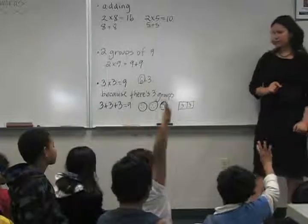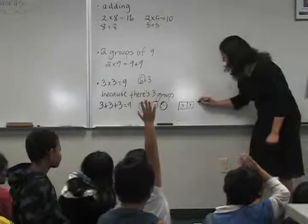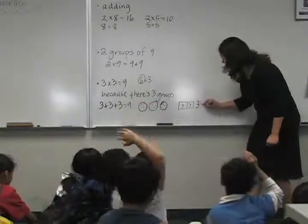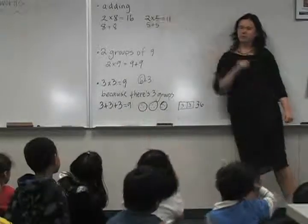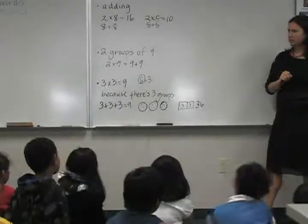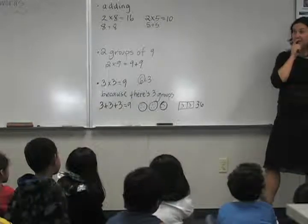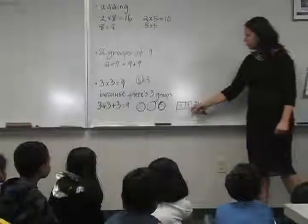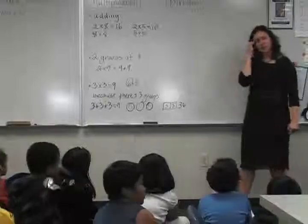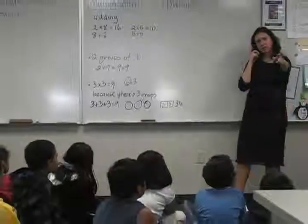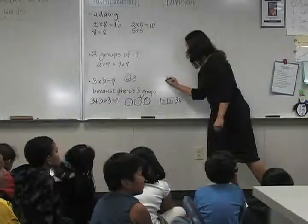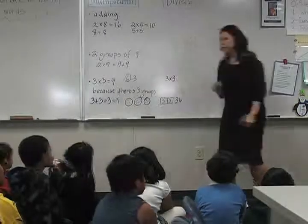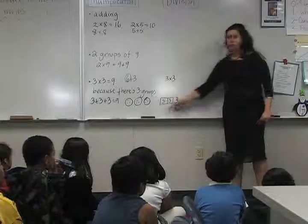6. So it equals 6. What does it show with multiplication? Can we write a multiplication? How many groups of 3 and how would we write that as multiplication? What do you think? 3 times 3. 3 times 3. 3 times 3. What do you guys think about that? Do we see 3 groups of 3 in here?